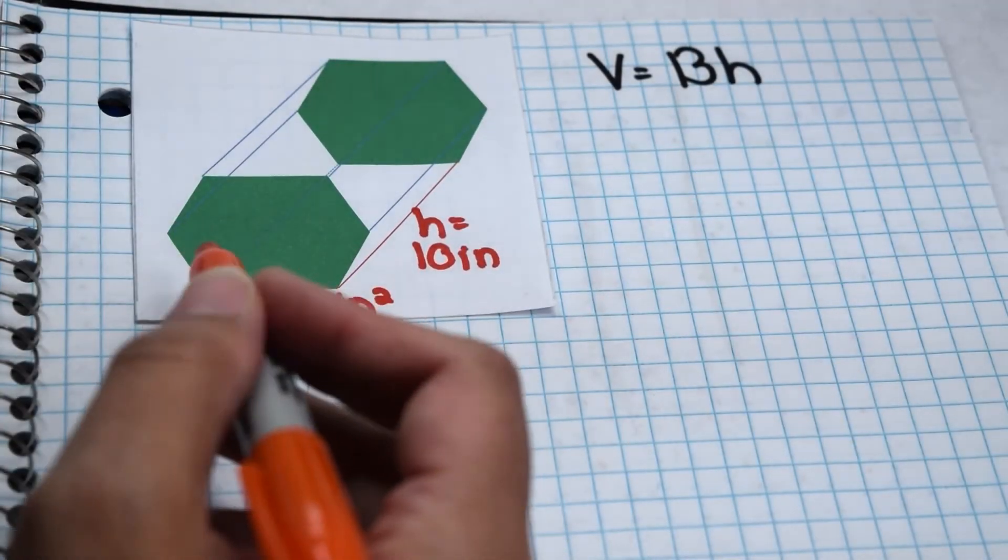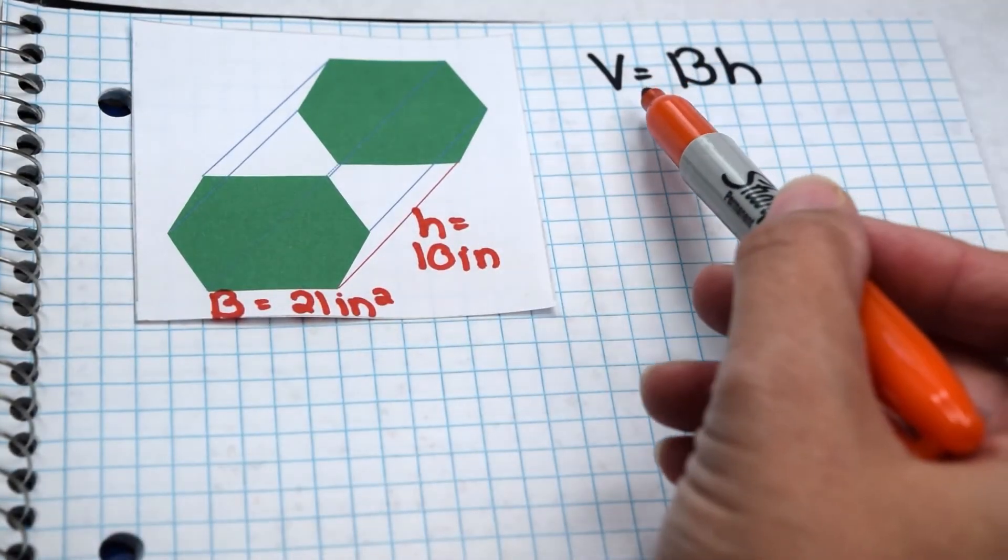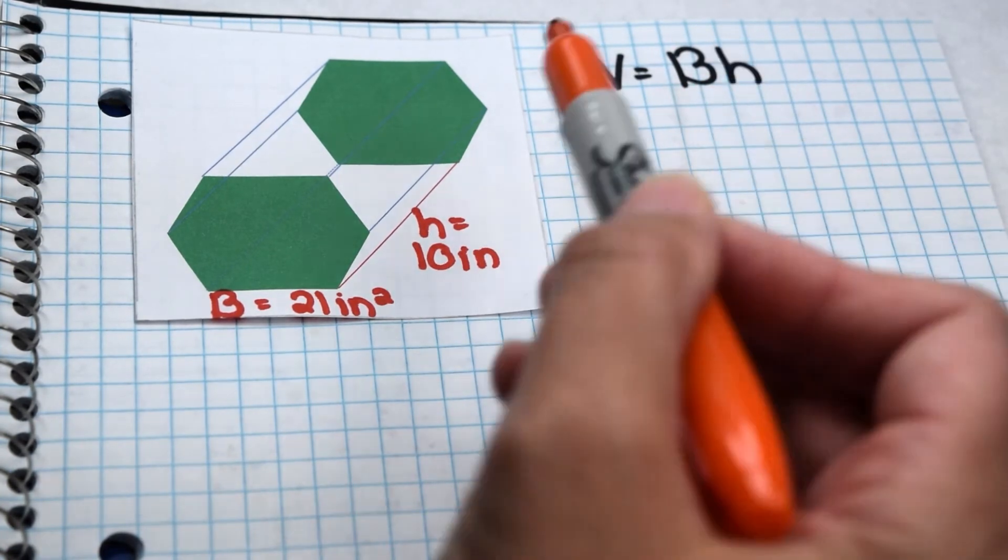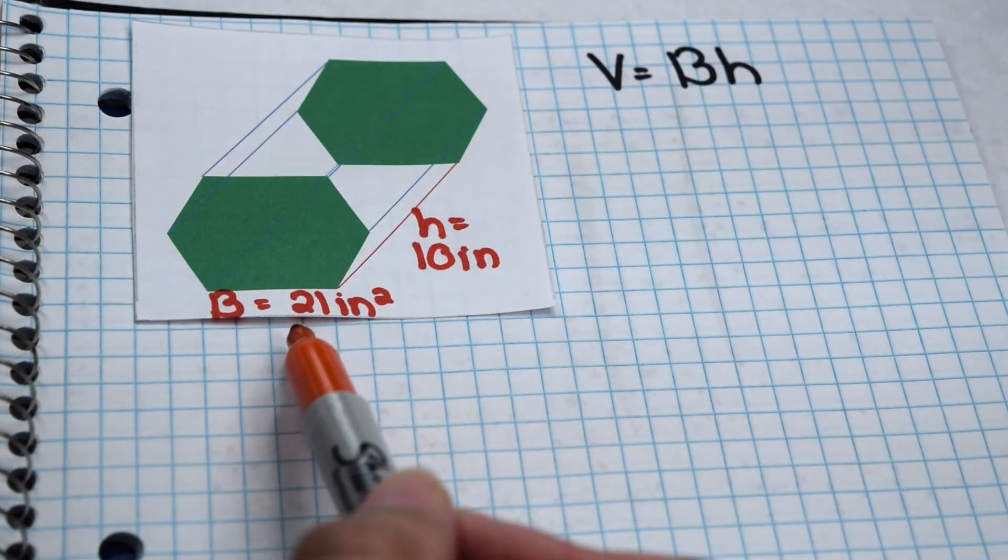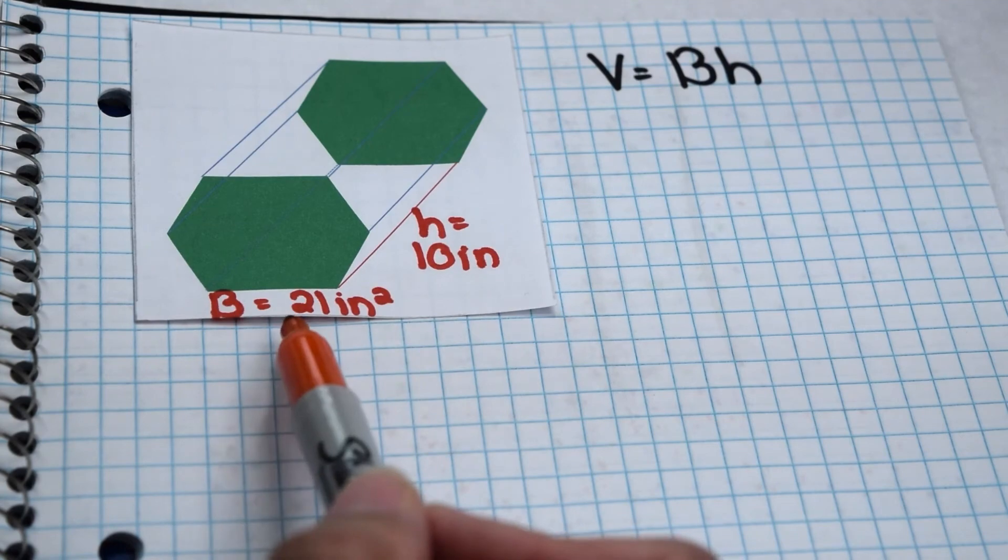Let's use our equation to find the volume of this hexagonal prism. Volume in general for prisms is area of the base times the height. Well, here they told us that area of the base is 21 square inches, and height is 10 inches.